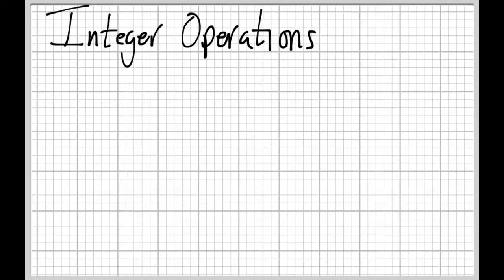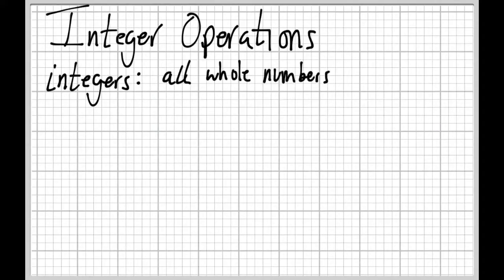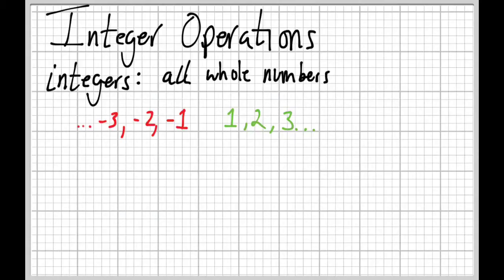First, before we really get into it, we need to make sure we understand exactly what we're talking about: integers and operations. So, what are integers? Integers are all the whole numbers. The easy ones are stuff like 1, 2, and 3, right — 4, 5, 6, and so on. If you're counting people, we usually use integers. We don't usually have half a person. Whole numbers. But positive numbers aren't the only whole numbers — we also have negative whole numbers: negative 1, negative 2, negative 3, and so on. We also have zero, which is in between the positives and the negatives.